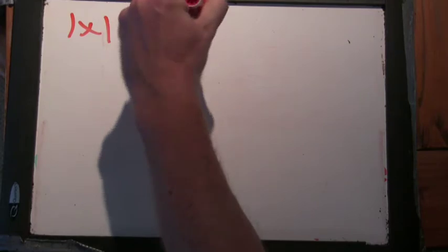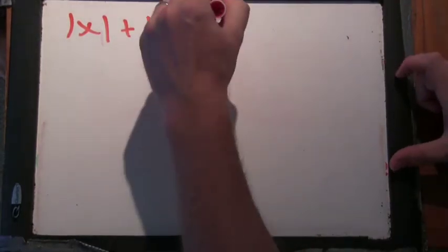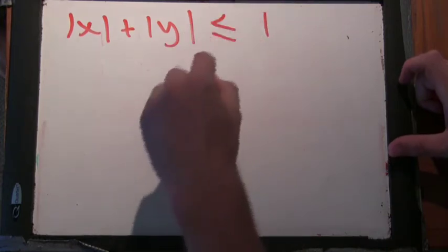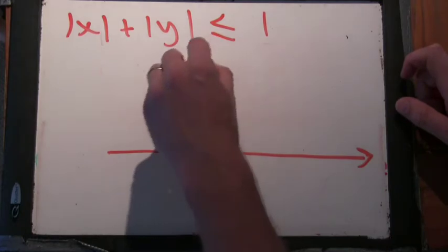Okay, so we are going to look at this equation. Absolute value of x plus absolute value of y. Careful, careful with that. Are we still in range? Yeah. We're going to try to just graph this in the x-y plane.